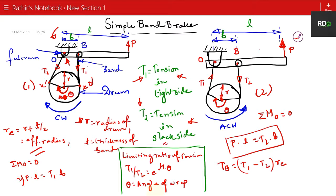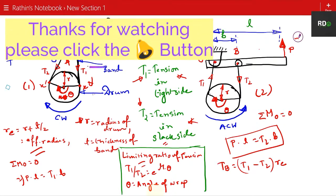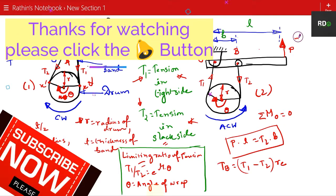The band is in contact with the drum in this angle—this entire contact is called the angle of wrap. Using the angle of wrap, you can determine the limiting ratio of tension: T1/T2 = e^(μθ), where μ is the coefficient of friction and θ is the angle of wrap.